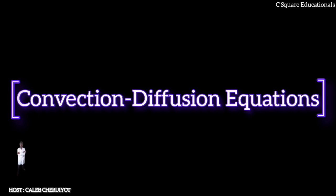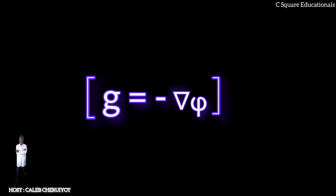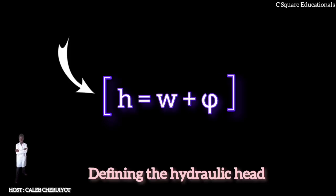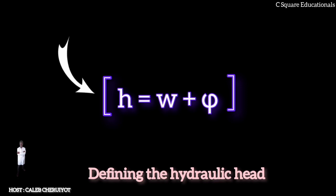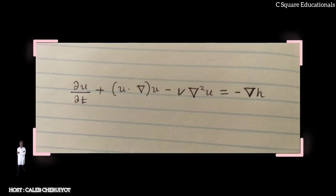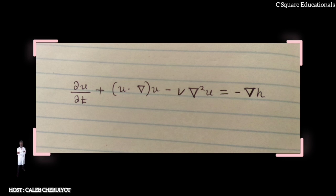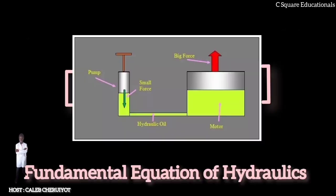In the usual case of an external field being a conservative field, g = −∇φ. By defining the hydraulic head H = ω + φ, one can condense the whole source into one term, arriving at the incompressible Navier-Stokes equation with conservative external field: ∂u/∂t + u·∇u − ν∇²u = −∇H. The incompressible Navier-Stokes equation with conservative external field is the fundamental equation of hydraulics.